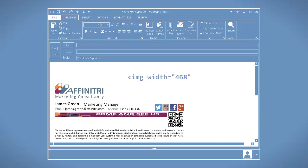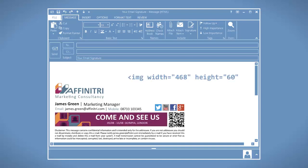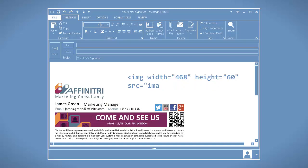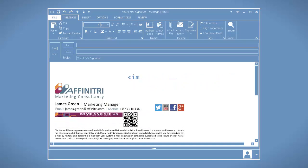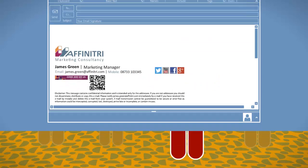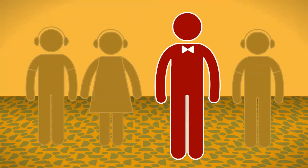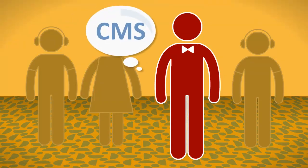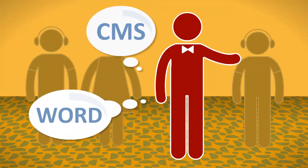Number twelve: do restrict image dimensions. Don't just rely on the size of the image being correct — hard code exactly how wide and high it will be in HTML. If you don't, Outlook might render the image strangely. For non-coders, that means you shouldn't use a web CMS or Word to draw out your signature — it doesn't work.